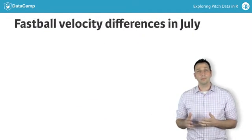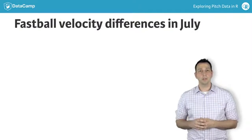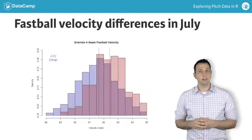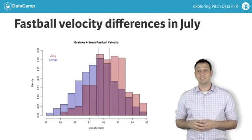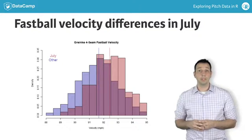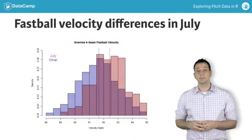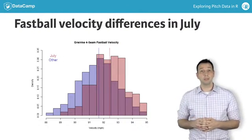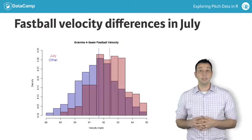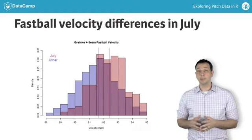You then focused specifically on fastball velocity and saw that in July, Granke had a tendency to throw harder than the other months of the year combined. This was clearly represented by the rightward shift in the fastball velocity distribution you see here.